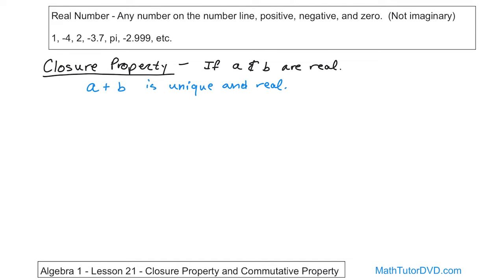And along those lines, you have something similar. If you take that number A and you multiply it by that number B, these are multiplied together, it is also unique and real. So this is why I'm saying sometimes you look at these things and you're thinking, well, these are obvious. What I'm basically saying here is that if I take the number 1, that's a real number, and I multiply it times the number 7, that's a real number, the answer, there's only one answer, and it's also a real number. In other words, you're not going to get an imaginary number back.